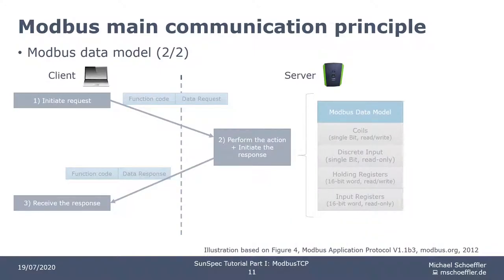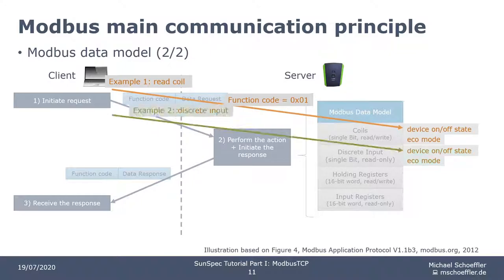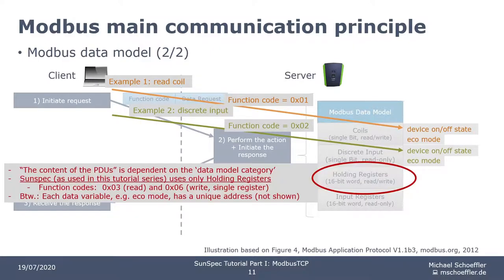Here's an example of how the choice of data model affects the communication. Let's assume device on-off state and ECO mode belong to the coils category and you want to read the data. Then you, as a client, send a PDU to the server. In this case, you have to set the function code to 1, because 1 is the function code for reading coils. Here's another example where the same data belongs to the discrete input category — in this case, the function code is 2. So the content of the PDUs depends also on the data model categorization. By the way, SunSpec uses only holding registers, which makes things a bit easier.